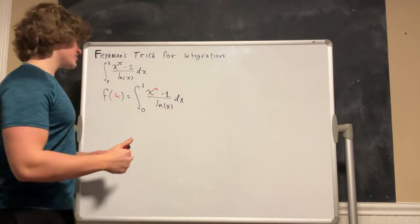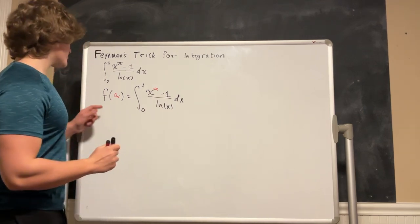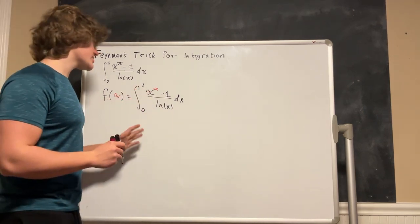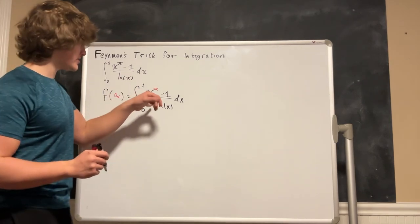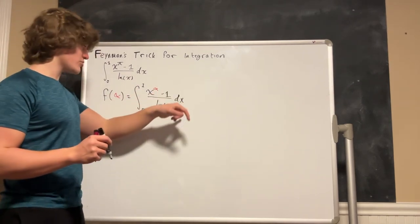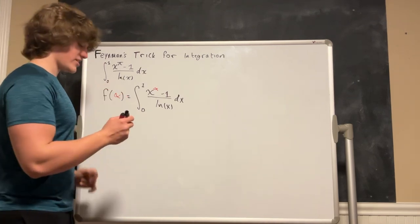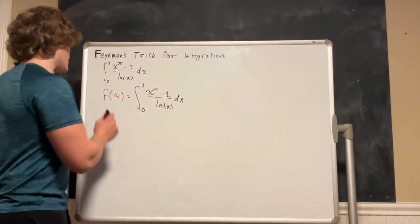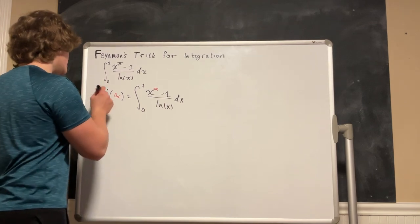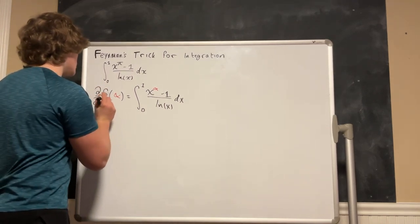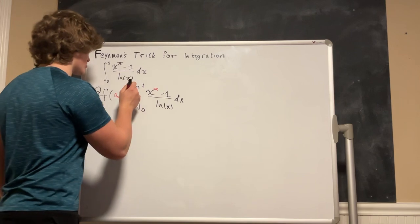Now we have this function right here in terms of alpha and x. However this is only a function of alpha because the x's in this equation are actually going to cancel out once we integrate so we do not need a bound of x over here. So the next step that we are going to do is we are going to differentiate both sides of this equation with respect to alpha and this will be a partial derivative.